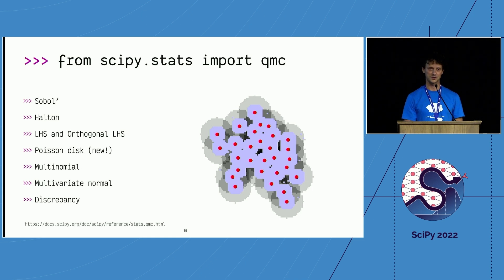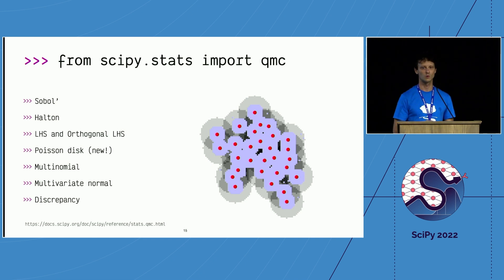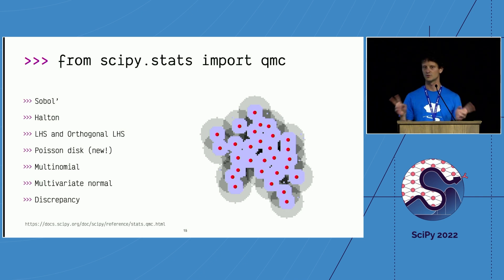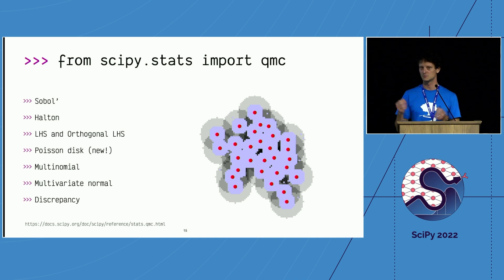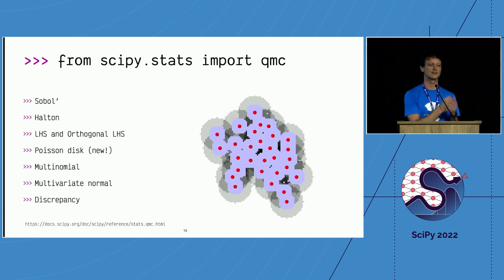There's also something very interesting: discrepancy. Discrepancy is a way to measure the quality of a sample — statistical quality. You have mainly two different criteria to measure quality: distance-based methods and geometrical-based methods. Visually, distance-based says all points are at least this far from each other. The discrepancy is a statistical method saying the sample is closer to a uniform distribution in N dimensions across all dimensions. This gives a metric allowing you to say one sample is statistically better than another.